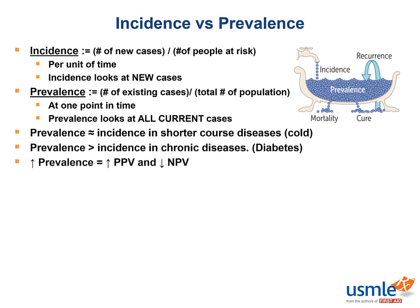An increase in prevalence also leads to an increase in positive predictive value. Recall that positive predictive value indicates that a person who tests positive for a disease is more likely to actually have the disease. So it stands to reason that if the disease in question is more common in the population, the chances of a positive test being a true positive are more likely.